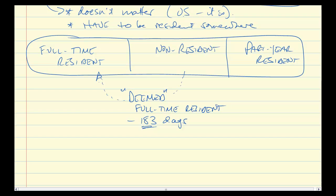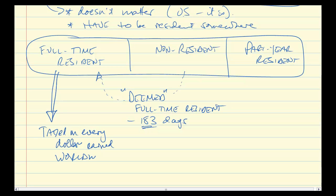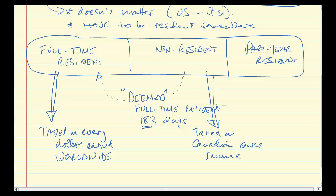And why does it matter? It matters a lot, because full-time residents are taxed on every dollar earned worldwide. So wherever you earn a dollar, the Canadian government has a right to tax it. Whereas non-residents are only taxed on Canadian source income. Income that is sourced in Canada is taxable in Canada, whether you live in Canada or not. That's why the distinction becomes important.